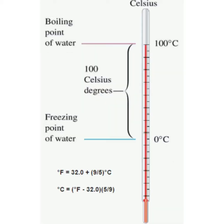First, we are going to study about Celsius. The Celsius scale is also called centigrade. It was first presented by Anders Celsius in 1742. The freezing point of water is defined as 0 degrees centigrade and the boiling point as 100 degrees centigrade. The difference between these two points is divided into 100 equal parts, and each part corresponds to 1 degree Celsius.